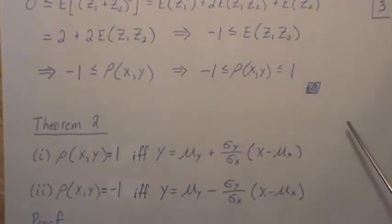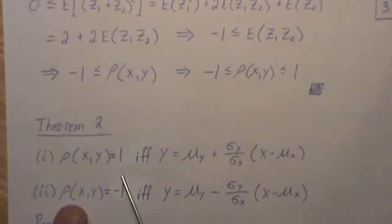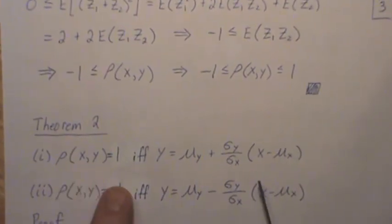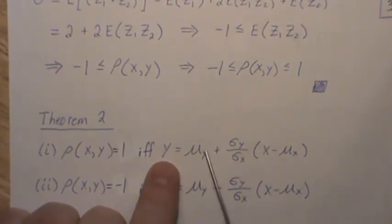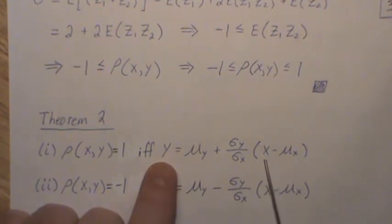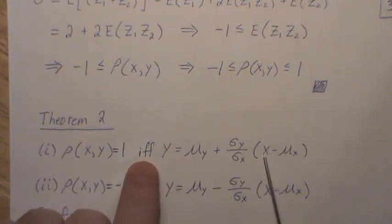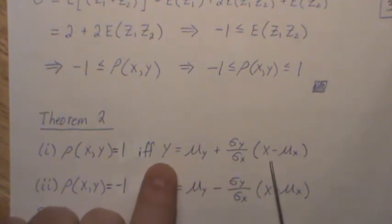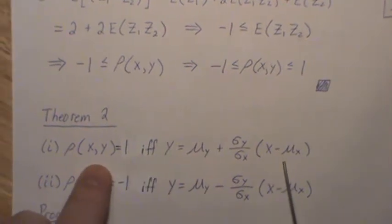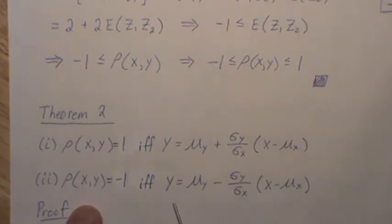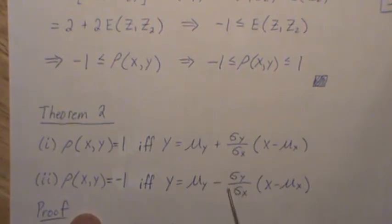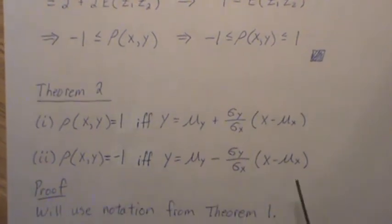Now the second theorem. These are if-and-only-if statements: if the correlation is 1 it implies a perfect linear relationship between x and y. Notice these are population parameters and they're constant, so this is the equation of a line in terms of x and y. The if-and-only-if says if there's a linear relationship between x and y then the correlation is 1, and vice versa. The same is true if the correlation is minus 1 — the linear relationship has a negative slope versus a positive slope. Let's prove that.